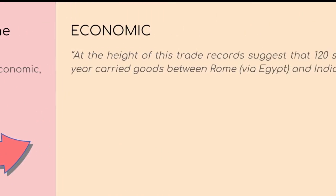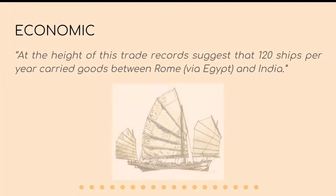Economically, its biggest breakthrough occurred during the first millennium BCE, when the Eastern, Southern, and Western Eurasian trading systems linked up to form a single Eurasian trading system, moving goods between all four of its centers of civilization: China, India, the Middle East, and the Mediterranean. At the height of this trade, records suggest that 120 ships per year carried goods between Rome via Egypt and India.